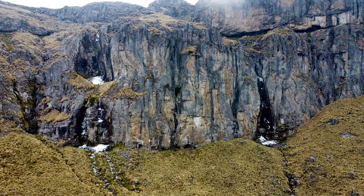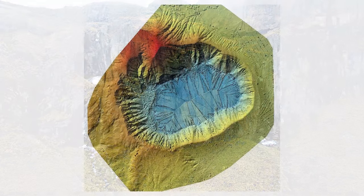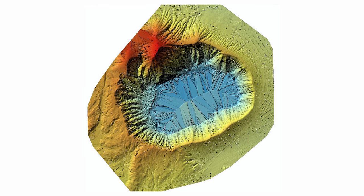Tenemos también modelos digitales de superficie, en donde viene ya la vegetación y los edificios. Esos también se usan para entender otro tipo de procesos que ocurren en el relieve. Un modelo digital de elevación no es otra cosa más que una representación del terreno dependiendo de la resolución del mapa, y esta representación en ocasiones puede llegar a ser un poco general porque tenemos que remover las cosas que están ahí.